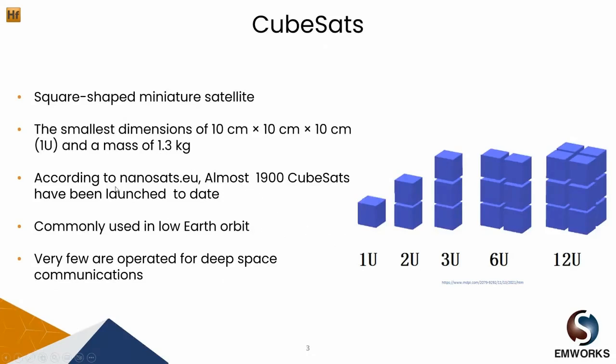According to nanosat.eu almost 1900 CubeSats have been launched to date. Most CubeSat missions take place at low Earth orbit or LEO which ranges from about 150 km up to approximately 600 km and is below the ionosphere. Within this region there are many science satellites and the International Space Station ISS.